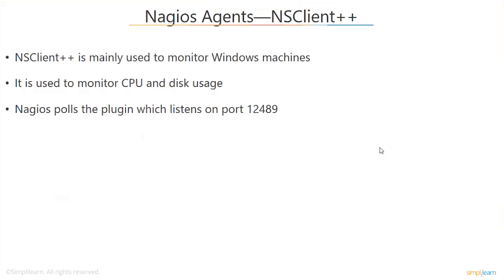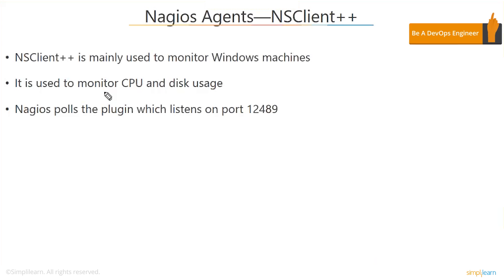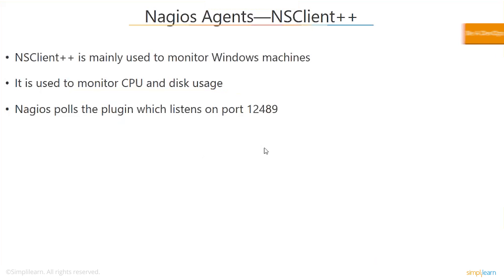The NS Client is basically mainly used to monitor Windows machines. Typically when we talk about servers, we end up talking more about Unix and Linux servers. Of course, now with a lot of Microsoft technologies being more robust — like SharePoint and things like that — there are Windows servers too. But 10 years ago, having a Windows server for production was actually kind of frowned upon. This agent helps you monitor your CPU, your disk usage, and it pulls the plug-in in. This particular agent listens on a specific reserved port always, and usually your system administrators or server administrators know all these things.